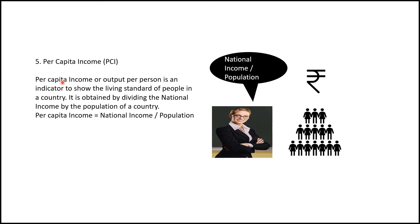Next is Per Capita Income. Per capita income means output per person — what one person produces or earns on average. We calculate it to find out the living standard of the people. Per Capita Income equals National Income divided by Population. It gives us an idea of the average income, but note it can be misleading since it divides between rich and poor equally.